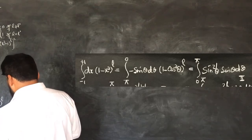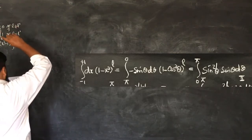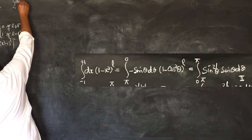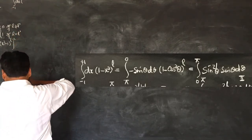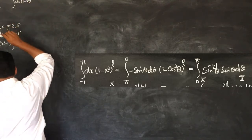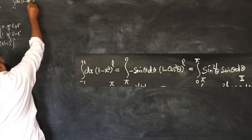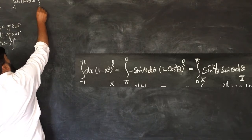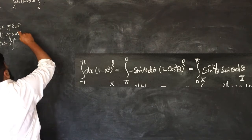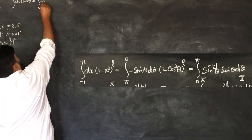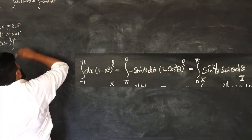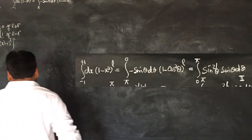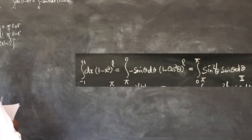By this substitution, my integral will become the integral from minus 1 to plus 1 of (1 minus x squared) to the power L. When cos is minus 1, we have pi here, so the limits go from pi to 0. I will write d x as minus sin θ dθ, and for 1 minus x squared, I will write 1 minus cos² θ, to the power L.